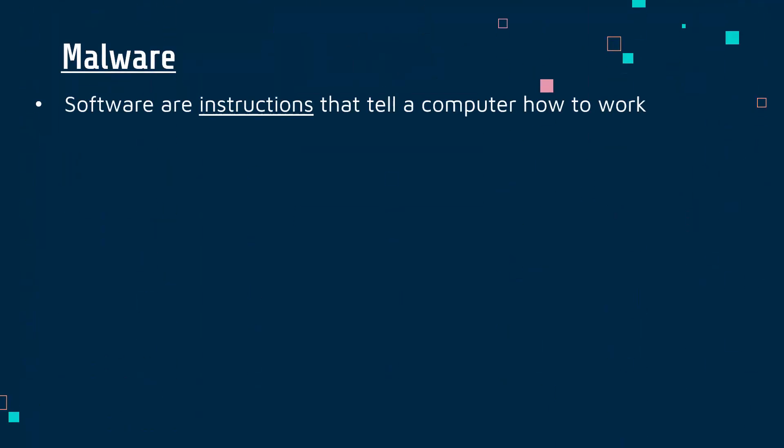Before I even do that, let's do a pre-definition of another really important concept, which is software. You may know what software is already, but in case you don't, software is the instructions - really a set of instructions - which tell a computer how to work. It's really any program running on your computer: things like iOS on an iPhone, the operating system itself, things like Google Chrome to access the internet, and games like Fortnite. All of them are examples of software, and software is made by somebody sitting down and spending a long time writing program code - loads of lines of code which comprise these instructions.